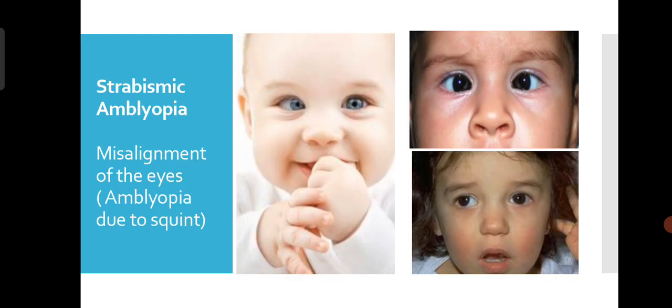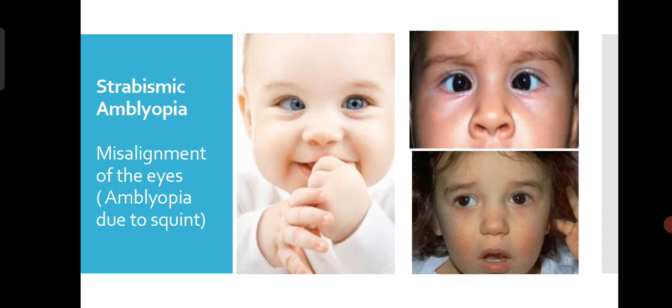Coming to the types of Amblyopia: strabismic Amblyopia occurs when the child has a squint. One eye is crossed while the other is straight, causing double vision. The squint eye is also the weaker eye, so the brain does not take that eye's image to avoid diplopia. That's how it develops into suppression and Amblyopia. This can be a convergent or divergent squint, and it needs to be treated at the earliest.